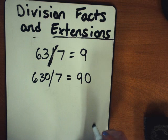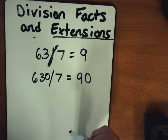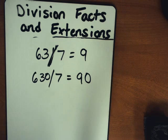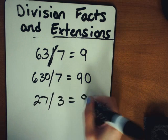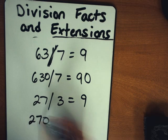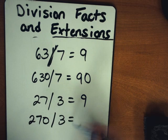I ask myself, how many groups of 7 goes into 630? So if I said 27 divided by 3 is equal to 9, then 270 divided by 3 is equal to 90.